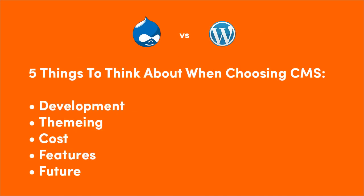So the five things you want to think about when choosing a system: number one is development. Do you have your own developer, or do you have a lot of money or time to spend on development? If time is a factor and you just want something fast, definitely choose WordPress. But if you don't mind working for it and getting something more comprehensive, choose Drupal.